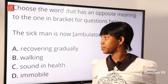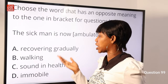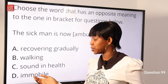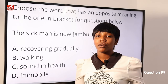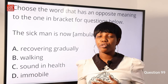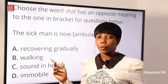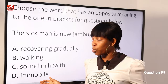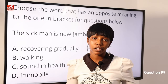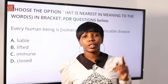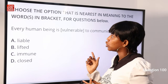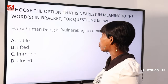Question 99: 'The sigma is now ambulatory.' Options: A) recovering gradually, B) walking, C) sound and healthy, D) immobile. 'Ambulatory' means able to walk around or move around. We are looking for the opposite in meaning. 'Immobile' means not able to move or walk around. Option D) immobile is the correct answer.